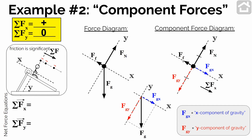You might have initially drawn the friction force larger than the x component of gravity, and that's not a big deal. We just have to go back and make sure to show that the sum of the forces in the x direction points in the positive direction — we can just make the friction force smaller or make the gravity x component larger. In the end, we just need to make sure our component force diagram is consistent with what we know is true about the sum of the forces in the x and y directions.